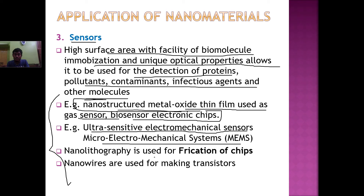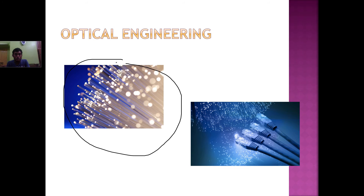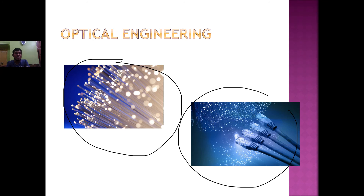Next is optical engineering. Most of us use the internet today — routers, telecom data services — which connect us all. The optical fibers and cables shown here are made up of nanomaterials, making their conductivity lightning fast with no loss of data, energy, or heat during transmission. These optical fibers are very effective in transferring data and lay a very important foundation in the internet services we use today.